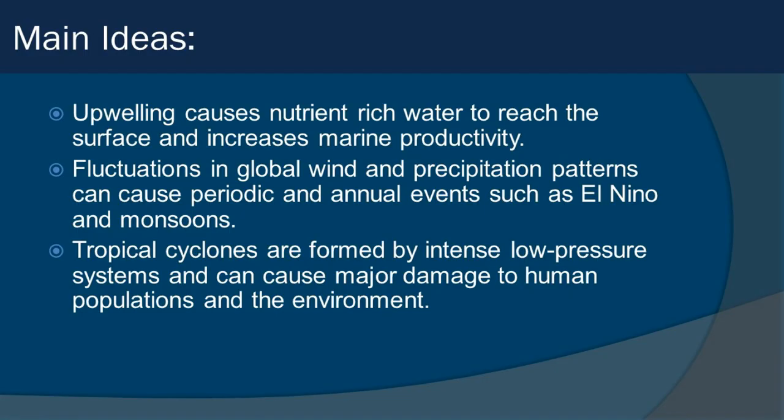Checking out our main ideas: first, we're going to talk about upwelling and how that causes nutrient-rich water to reach the surface and increase marine productivity. Then we're going to look at the fluctuations in global wind and precipitation patterns that can cause periodic and annual events such as El Niño and monsoons. Finally, we'll talk about how tropical cyclones are formed by intense low-pressure systems and can cause major damage.